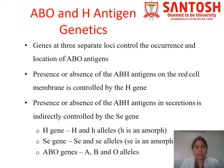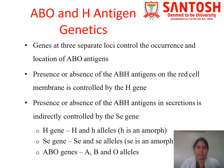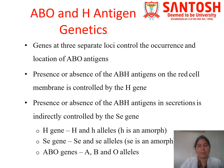The H gene has two alleles: capital H and small h. Small h is an amorphous allele, which means it is not expressed. Se also has two alleles: capital Se and small se, where small se is amorphous. ABO genes have A, B, and O alleles.